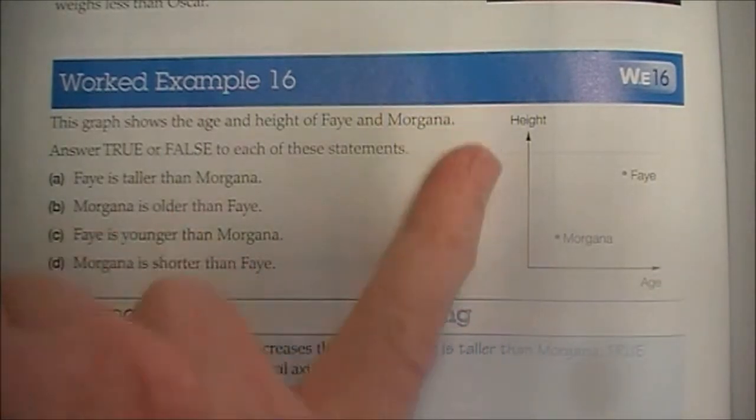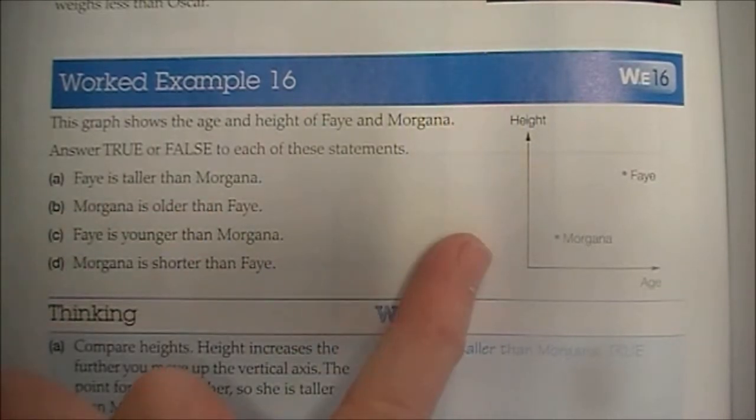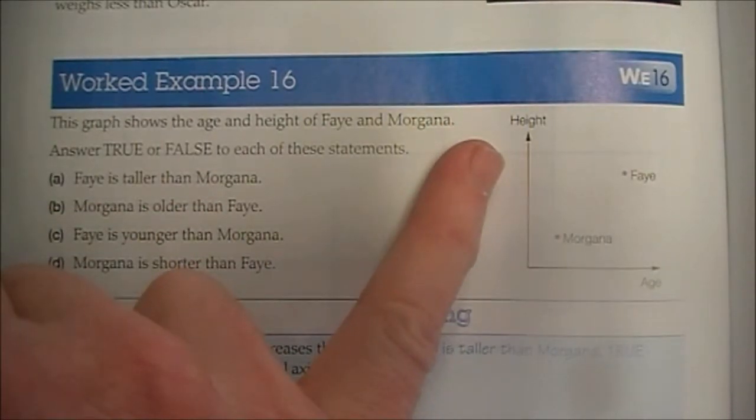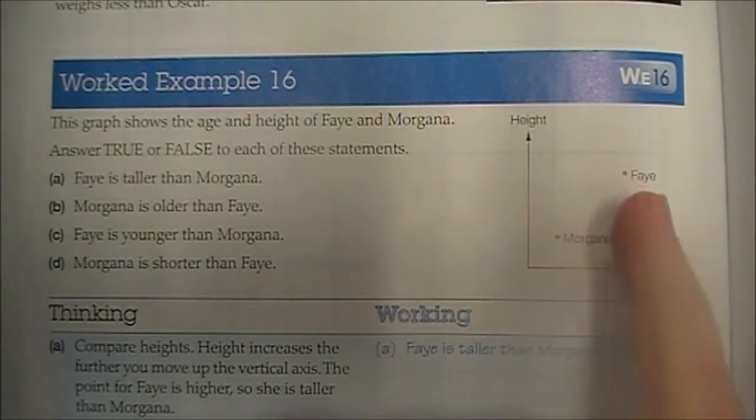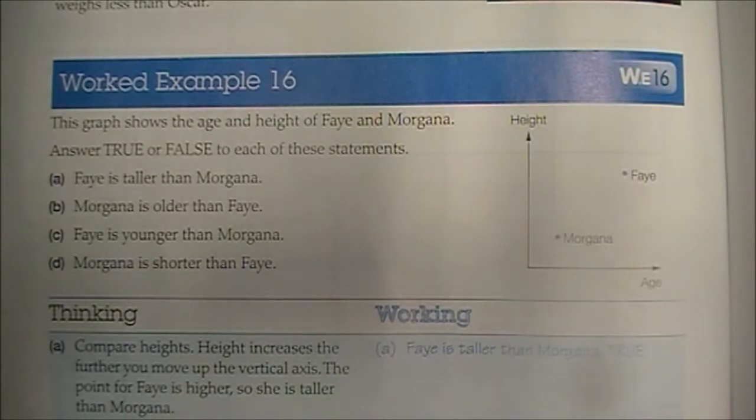And we have height up the y-axis. Once again, Faye is higher on the height chart than Morgana is. This is known as a point graph because we have the dot points on there.